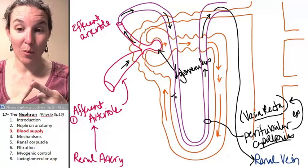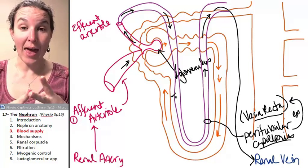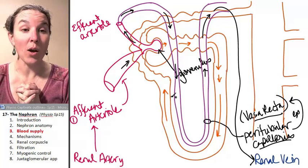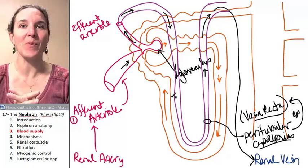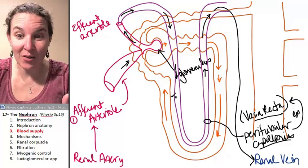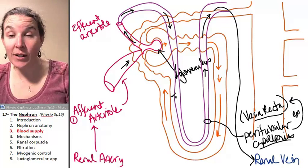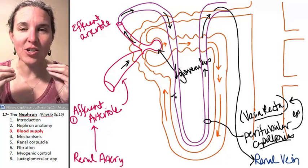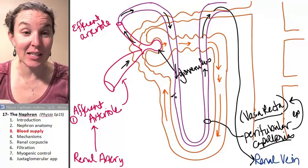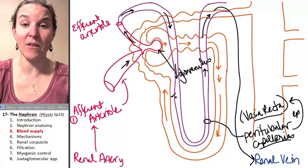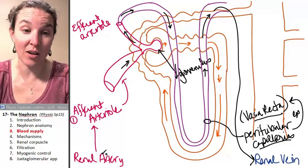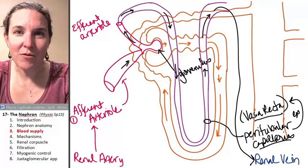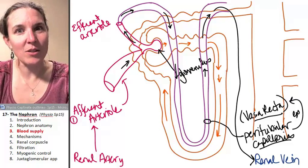You now have a blood supply and a tubule. We can actually boil down all nephron function to four things, and understanding those four things is going to be critical for looking at the specifics of each part of the nephron. Mechanisms of function — that's what's coming next.